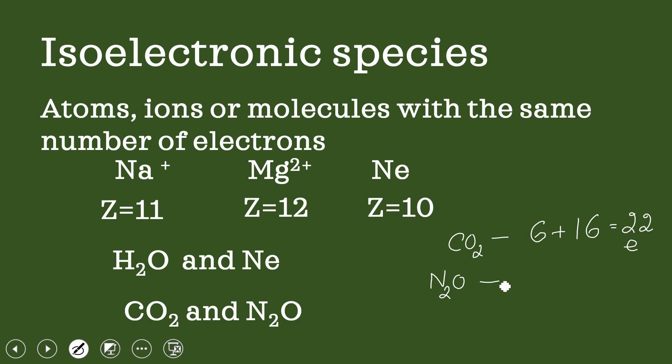Nitrous oxide: nitrogen atomic number is 7, so two nitrogens will have 14 electrons. One atom of oxygen will have 8 electrons, so totally you have 22 electrons. Carbon dioxide and N2O are isoelectronic. Water and neon are isoelectronic, and these three are also isoelectronic.